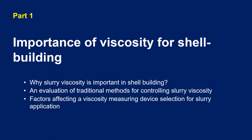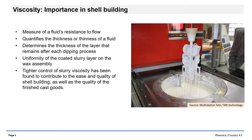Why is slurry viscosity important for shell building? Because it influences all stages of the process, from the first to the last layer. Viscosity measures the rate at which a fluid flows under stress. Since shell building relies on gravity to pull excess slurry off the form and from earlier layers of green ceramic, viscosity determines the thickness of the layer that remains after each dipping process. The simplest and most direct way to ensure uniform and consistent shell layers is to measure and control slurry viscosity. Tighter control of slurry viscosity has been found to contribute to the ease and quality of shell building, as well as the quality of the finished cast goods.